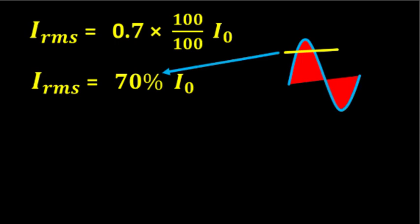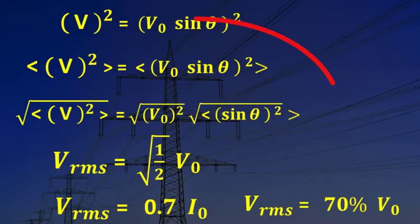RMS value of AC current is equal to 70 percent of the peak value of an AC cycle. We can apply the same procedure to get the root mean square value of AC voltage.